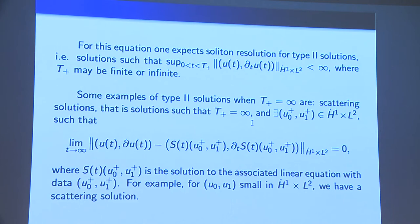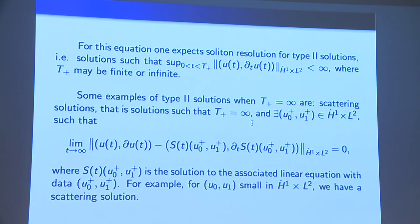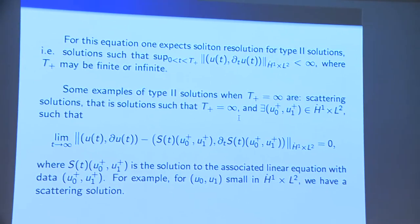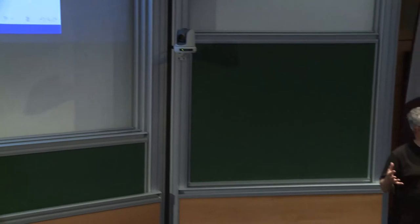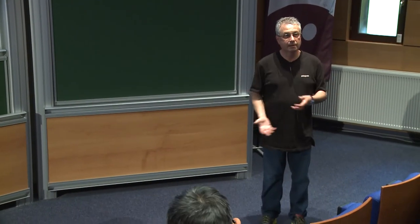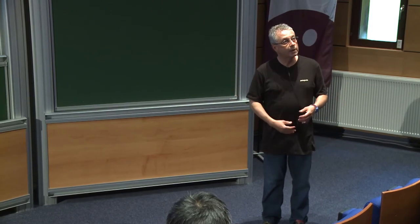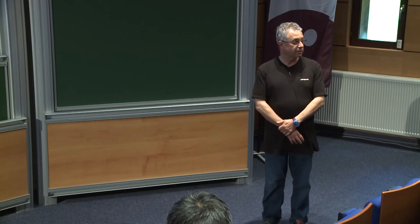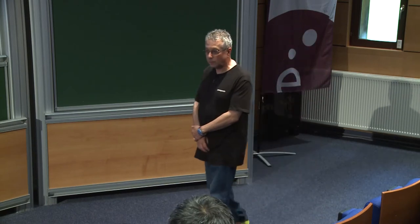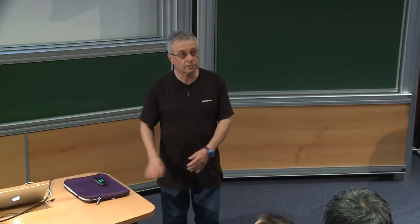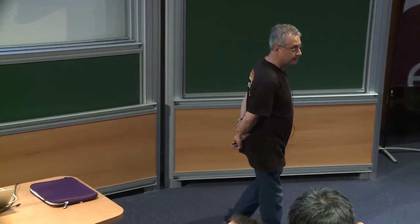A few seconds of thought tell you that soliton resolution can only hold for solutions that remain bounded in the H1 cross L2 norm, because if you have this decomposition, linear solutions clearly have boundedness, and for the soliton part you also have boundedness — since they are rescaled translates of a single function. So to understand soliton resolution for this equation, we restrict ourselves to solutions bounded in the energy norm.